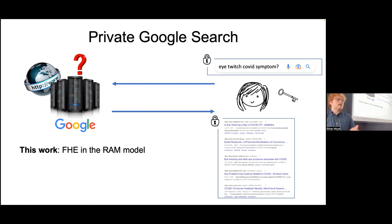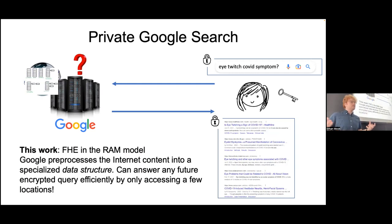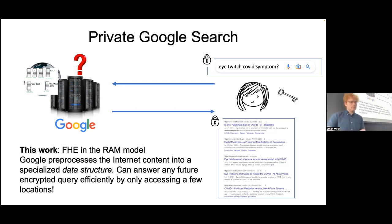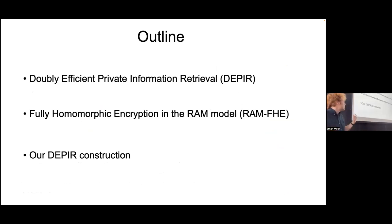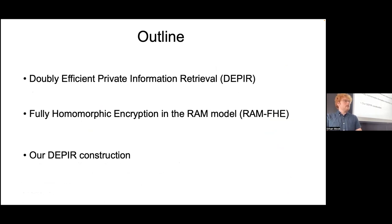In this work, we construct FHE for RAM computation. At a very high level, Google preprocesses its index into some data structure, and then using this data structure, it can later answer future Google search queries by only looking up very few locations in this data structure. I'm going to talk about the simpler problem first, which is doubly efficient private information retrieval, then move on to give the model of RAM FHE and our results, and then cover the high-level techniques of our DPIR construction, leaving the RAM FHE construction for Wike's talk after lunch.